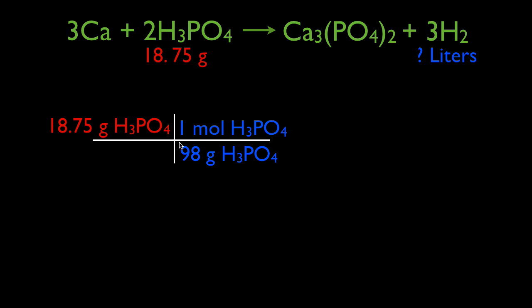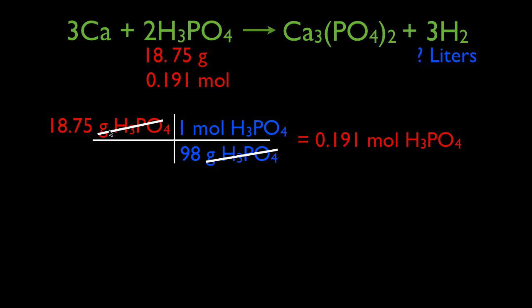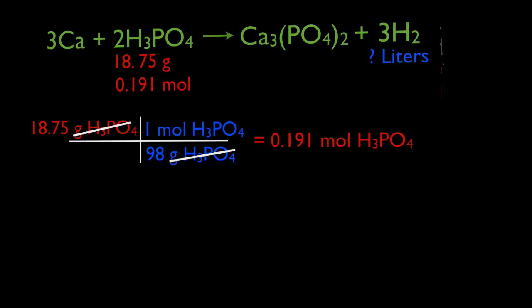Now we're going to convert using the molar mass. One mole of phosphoric acid is equal to 98 grams. I put the grams on the bottom so I can cancel and get out of grams and into moles. Taking 18.75 divided by 98, I get 0.191 moles of phosphoric acid. So 18.75 grams is equal to 0.191 moles.